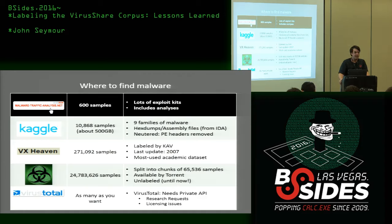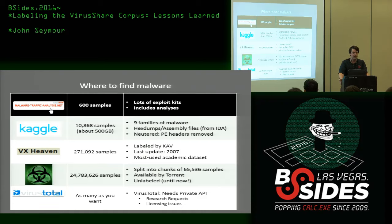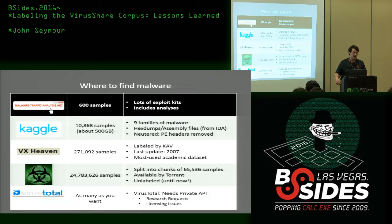If we want to do data science, we have to have data to actually work with. So where do we find data in the malware domain? Here are some of the best places I've found for malware. I know there are lots of others — Contagio, Malshare, things like that — but these are the ones I've found to be used most in industry and academia.